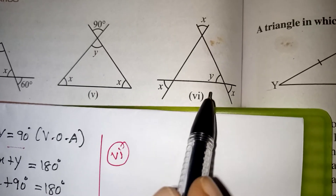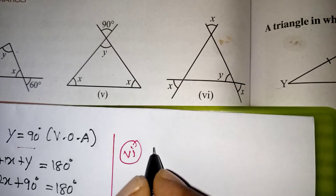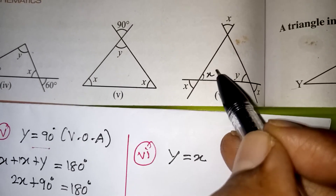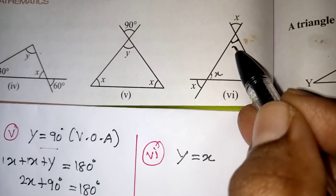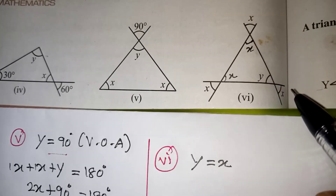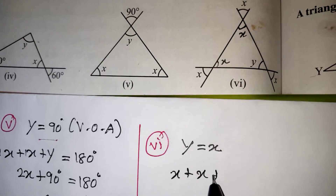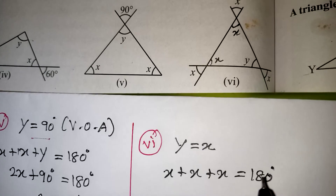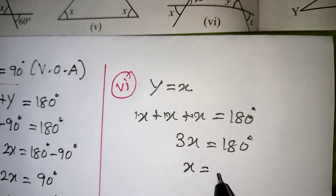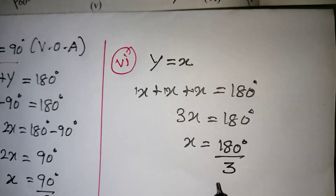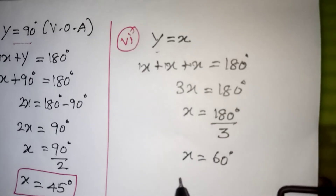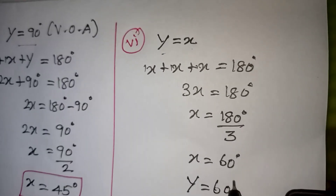Last one, question number 6. Look at the diagram. y and x are vertically opposite angles, so they are definitely equal: y is equal to x. Since this angle is x, the vertically opposite angle here is also x, and the other vertically opposite angle is also x. So the interior angles of the triangle are x plus x plus y. But y is also equal to x, so we write x plus x plus x equals 180 degree, because all three angles equal x. Therefore 3x equals 180 degree, and x equals 180 divided by 3, which gives x equal to 60 degree. Since y equals x, y is also 60 degree — both are 60 degree.